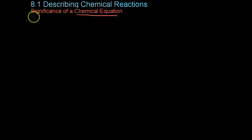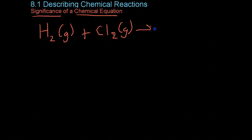We're going to be looking at the significance of a chemical equation. So let's write an example first. We'll take gaseous hydrogen, which is diatomic, reacts with gaseous chlorine,